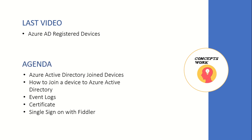The agenda for this video will be: knowing what Azure AD joined devices are, what exactly happens when you join a device to Azure Active Directory, what logs you can refer to in Event Viewer, and how the certificate is being provisioned on a particular machine — a process different from Azure AD registered devices.